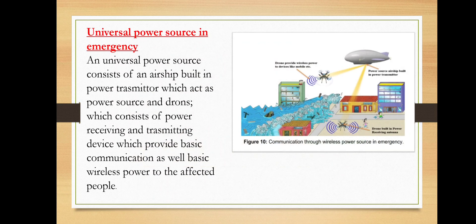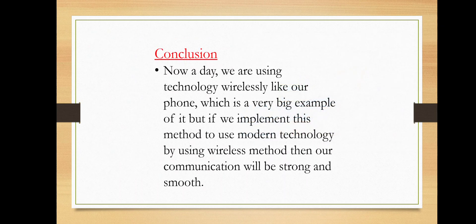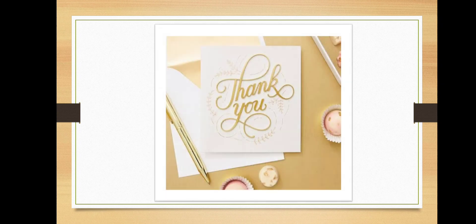An emergency and universal power source consists of an airship-built power transmitter which acts as a power source, and drones which consist of power receiving and transmitting devices that provide basic communication as well as basic wireless power to affected people. In conclusion, nowadays we are using technology wirelessly, like our phones. If we implement this method using wireless power transfer, our communication will be stronger and smoother. Thank you.